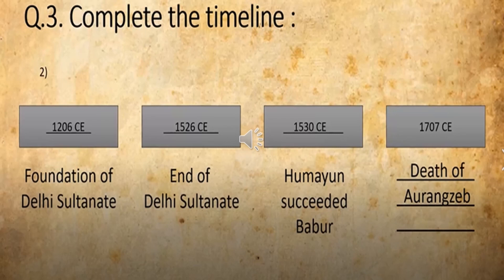Otherwise the year will be given and you have to write that in that year it was the Foundation of Delhi Sultanate, and you have to click on the right option. Then the second one: End of the Delhi Sultanate. Here also they have told you to write down the year, or the year will be given and they will ask: end of Delhi Sultanate or end of the Mughal Empire.